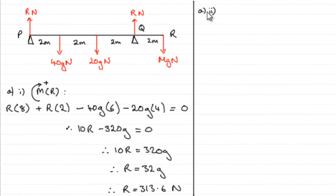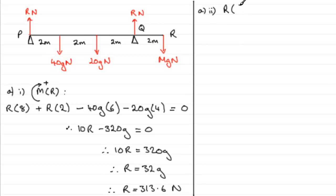For part A, part 2, we've got to find M — the mass of this block that was placed at R. To do this, we consider resolving vertically. It's up to you whether you take upwards or downwards as positive. I'm going to take downwards as positive, purely because M acts in that direction, so it's going to be a positive value in my equation. Experiment with resolving upwards — you should get the same answer.